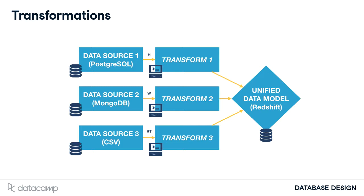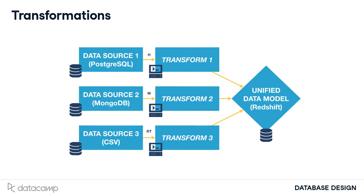These transformations can be hand-coded, but you would have to make and maintain a transformation for each data source. You can also use a data integration tool which provides the needed ETL — for example, Apache Airflow or Scriptella.